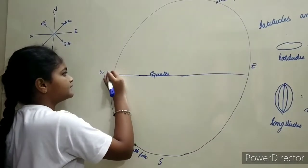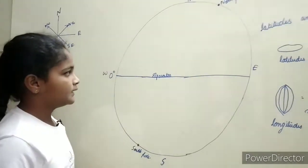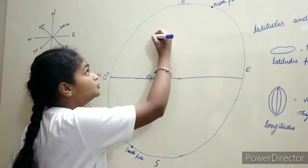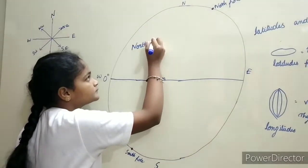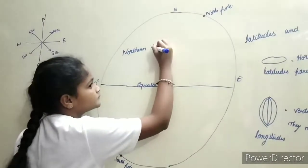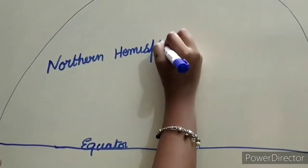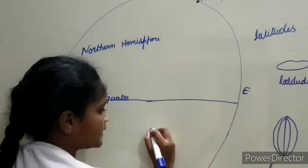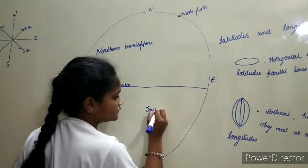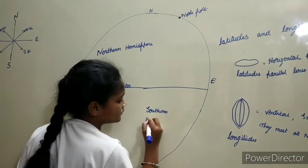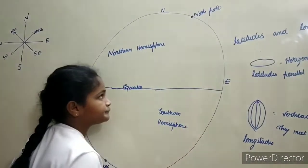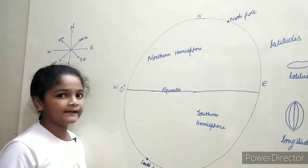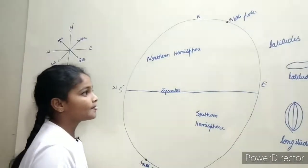The Equator is at 0 degrees. This equator divides the Earth into two hemispheres: Northern Hemisphere and Southern Hemisphere. Only the equator can divide the Earth into these two parts.